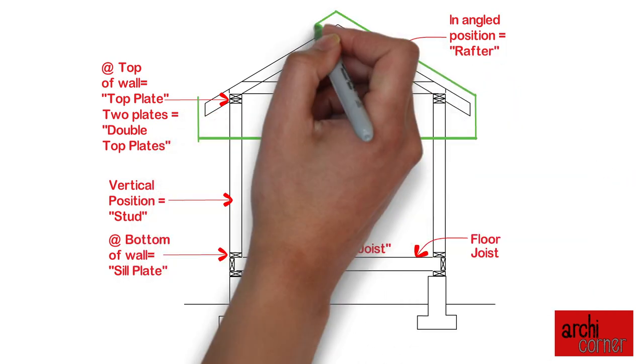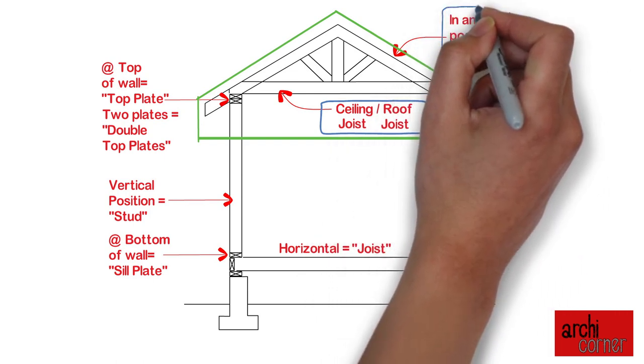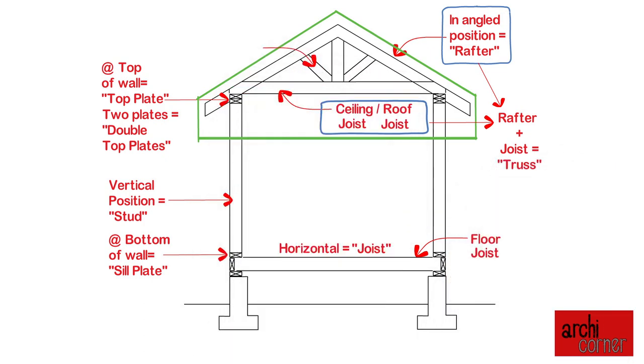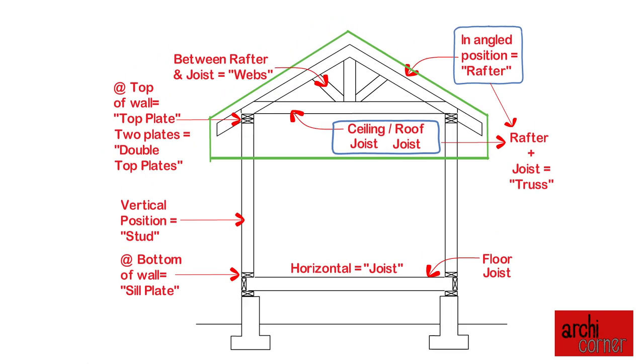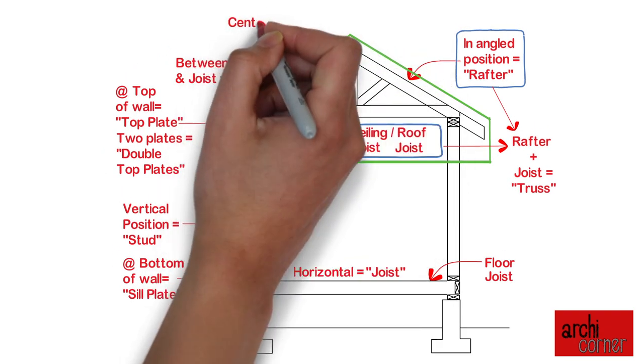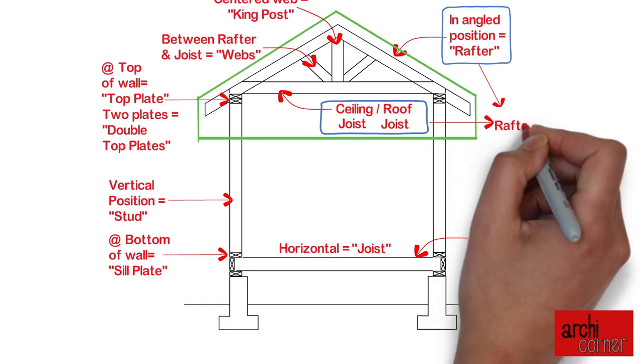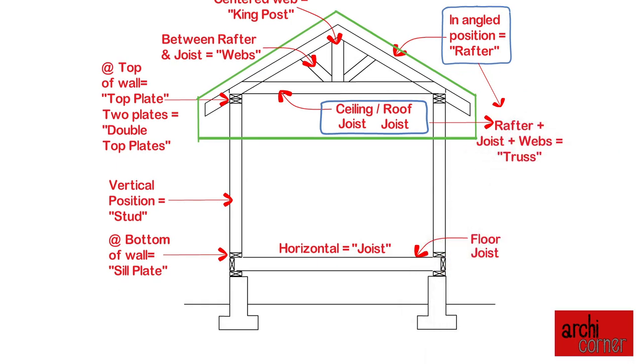Oftentimes the rafter and joist create a triangular shape. As an assembly, the rafter and the joist make up a truss. In between the rafters and joists, you have webs — all those members in the middle are called webs. Except for the one in the middle: if there's a member in the center, it's called a king post. As an assembly, this triangular area is called a truss. So you can see that the names of different members have nothing to do with size. This entire section could have been built with 2x4s — it's where that 2x4 is and what purpose it serves that determines whether it's called a stud, a joist, a rafter, a sill plate, a top plate, etc.